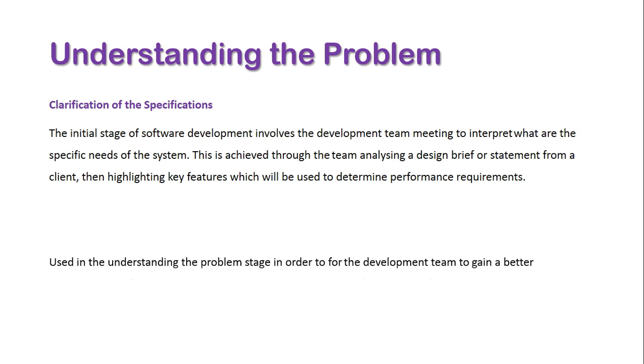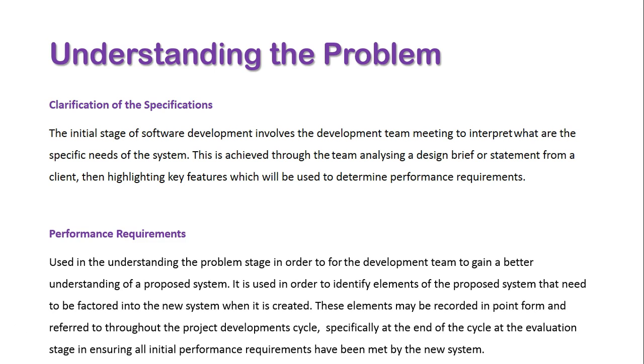Performance requirements are used to understand what's going on and what the system requirements are. They identify the elements that need to be factored into the new system. These elements may be recorded in point form and referenced throughout the project development cycle, specifically at the evaluation stage, to ensure all initial performance requirements have been met.